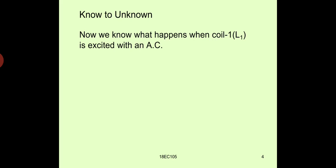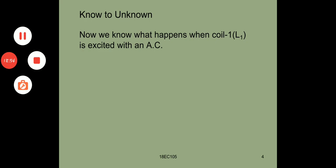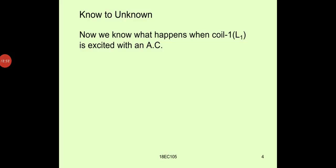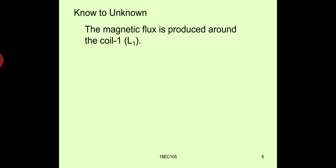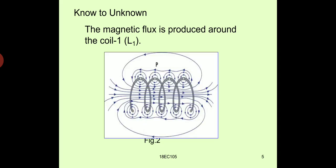Let us move from known to unknown. We know what happens when a coil L1 is excited with an AC supply. A magnetic flux is produced around the coil as shown in the figure below. There is magnetic flux produced around the coil and around each winding.